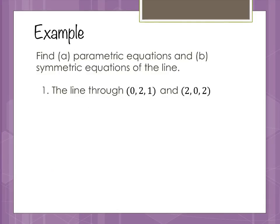We're going to do an example. We have a line through the points (0, 2, 1) and (2, 0, 2), and we're going to find both the parametric and the symmetric equations of the line.